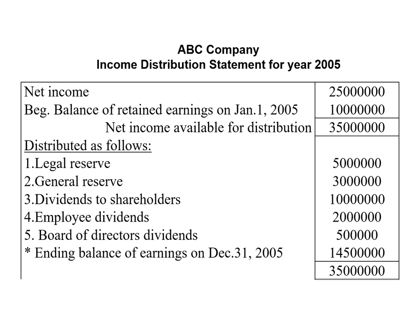Then we go to the income distribution statement. The net income is added to retained earnings at the beginning of the year to get net income available for distribution. This is then distributed as follows: a part goes to legal reserve, general reserve, dividends to shareholders, employee dividends, and board of directors dividends. The ending balance of retained earnings will remain at the end of the year to complete the equation.